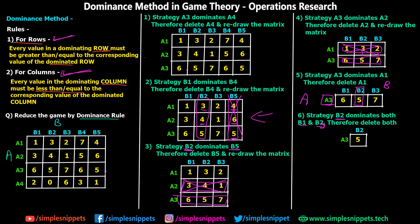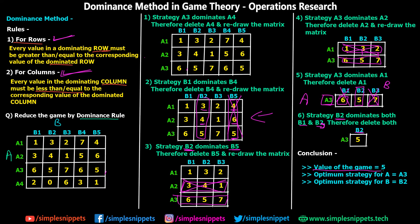To reduce the strategies of player B, strategy B2 dominates both B1 and B3. B2 has a value of 5 which is less than B1's value of 6, and also less than B3's value of 7. So we completely erase B1 and B3, leaving only B2. This is our final answer: the value of the game is 5, the optimum strategy for A is A3, and the optimum strategy for B is B2.